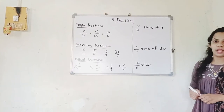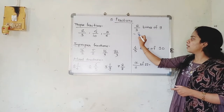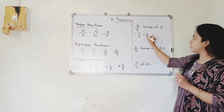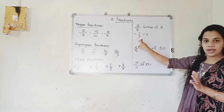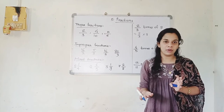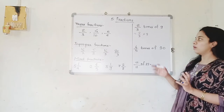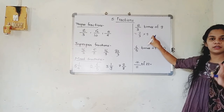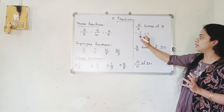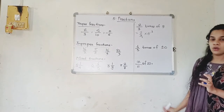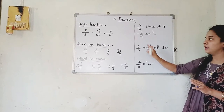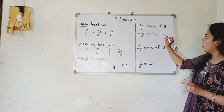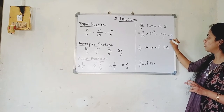Now the next part: 2 upon 3 times of 9. When the words 'times of' or 'of' appear, it always means multiplication. So we write 2 upon 3 multiplied by 9. In the 3 times table, 9 occurs — 3 threes are 9 — so we cancel: 3 and 9 cancel, giving 1 and 3. What remains is 2 multiplied by 3 in the numerator and 1 in the denominator. The answer is 6 upon 1, which is 6.